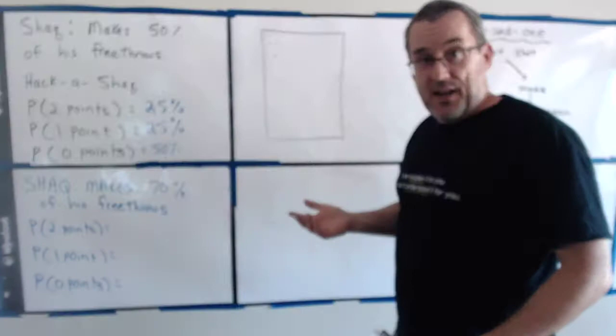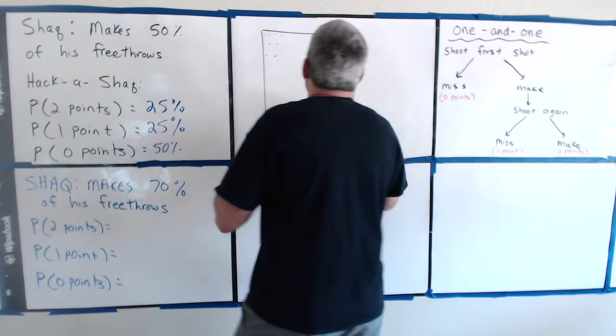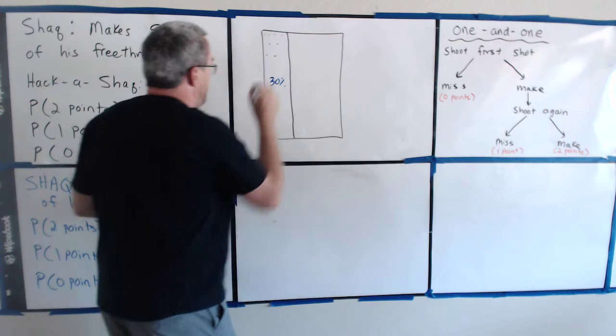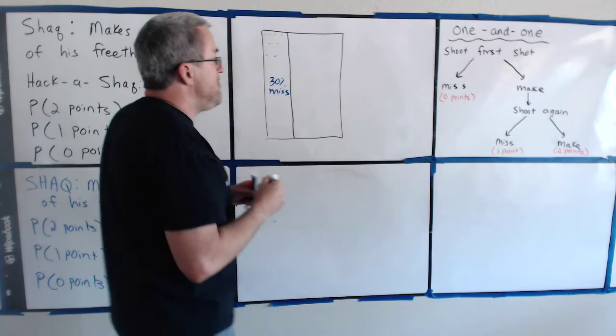Now I'm not going to measure it out precisely, but I'm going to try to have it visual so that it looks a little bit like 70-30. So let's put the 30% over here and the 30% of the time he just misses. And if you miss the first shot, the turn is over.